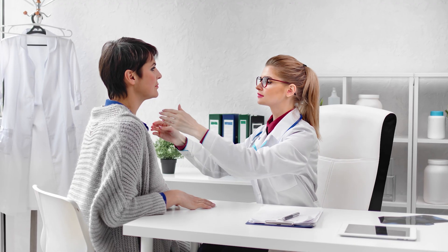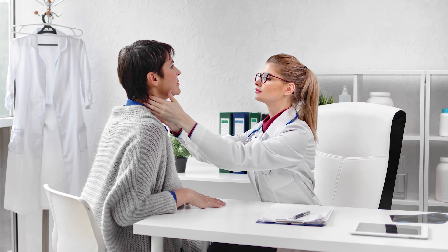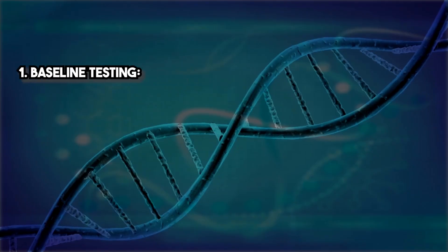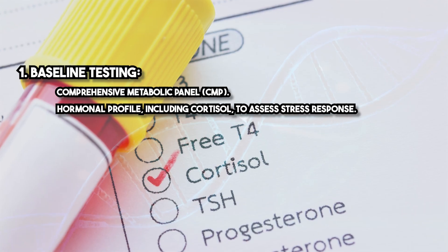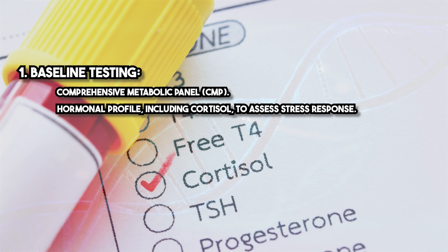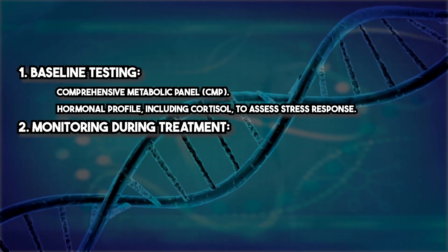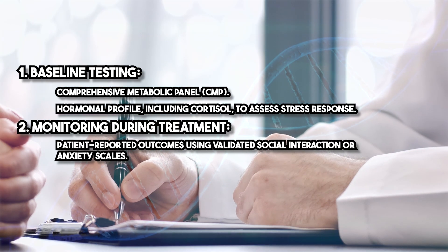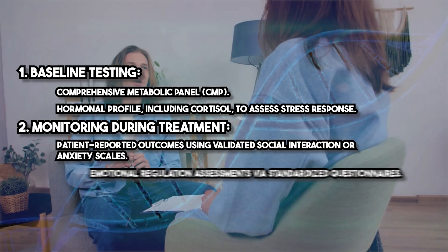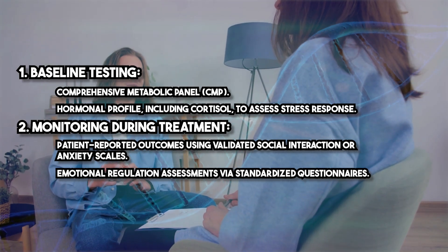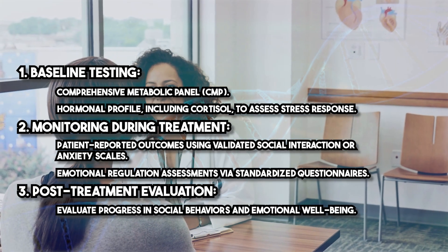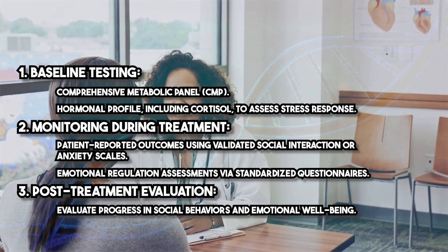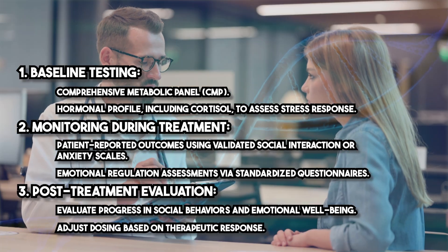While laboratory testing is not routinely required for social applications, baseline and ongoing assessments can enhance treatment efficacy. Baseline testing includes a comprehensive metabolic panel (CMP) and a hormonal profile including cortisol to assess stress response. During treatment, monitoring uses patient-reported outcomes with validated social interaction or anxiety scales and emotional regulation assessments via standardized questionnaires. Post-treatment evaluation should assess progress in social behaviors and emotional well-being, with dosing adjusted based on therapeutic response.